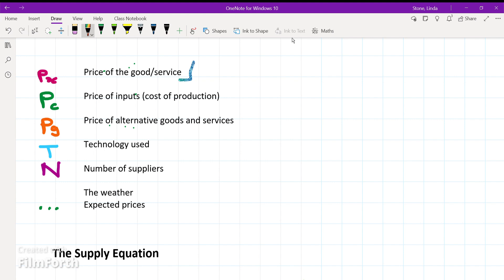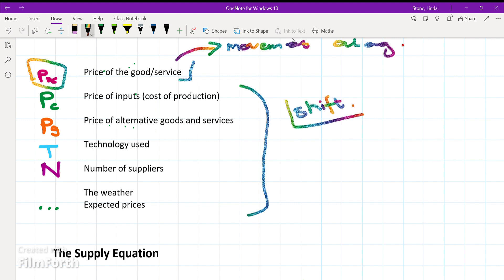In the previous video, we learned that the price of a good will cause a movement along the curve. The price of the good is denoted by Px. Now, any other factor will cause a shift of the supply curve.